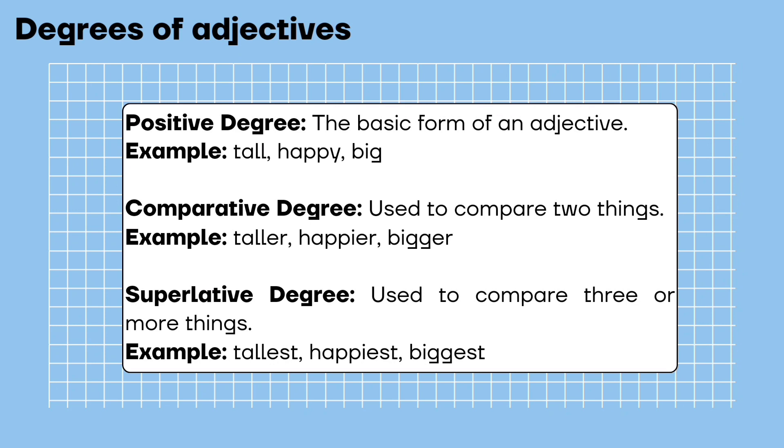Degrees of adjectives. Positive degree: the basic form of an adjective. Example: tall, happy, big.